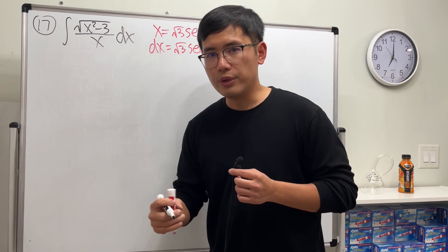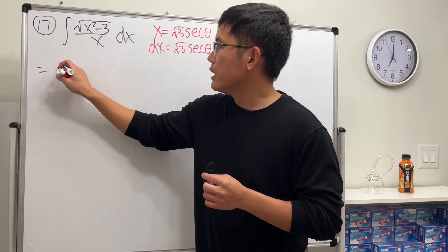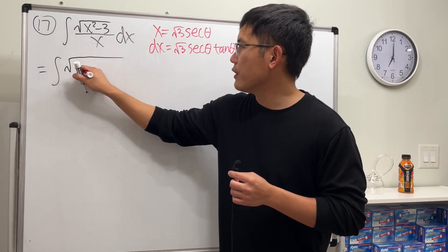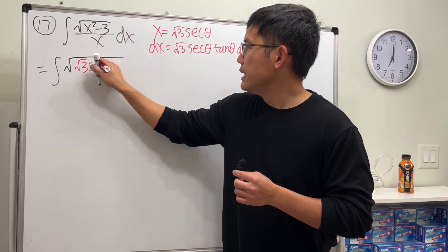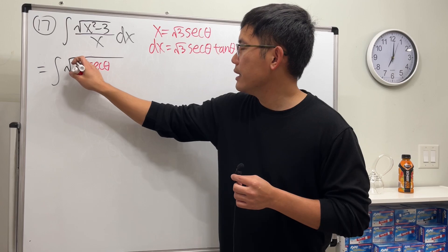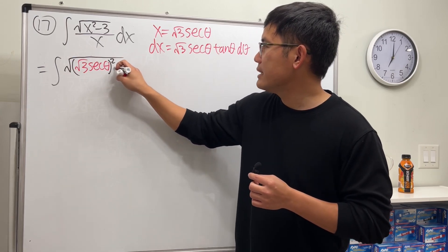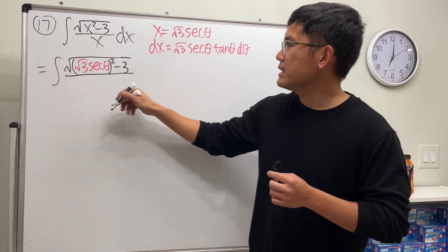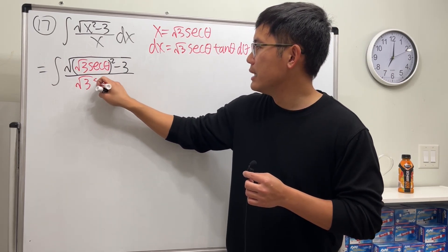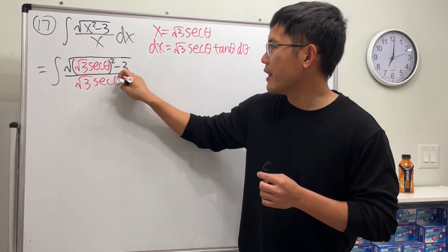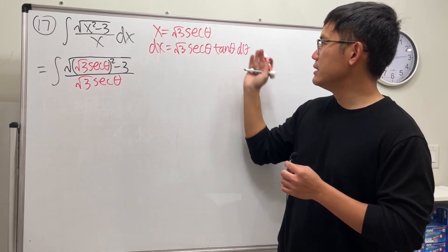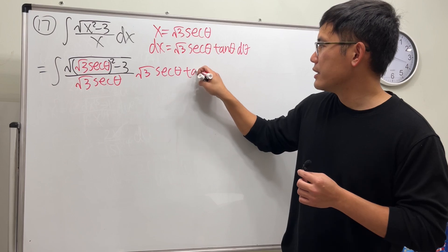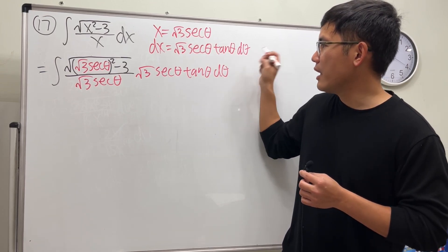Let's take this integral to the theta world and see what happens. We have the integral: square root of — x is square root of three secant theta, and we have to square that minus three — over x, which is square root of three secant theta — and then dx is square root of three secant theta tangent theta d-theta.